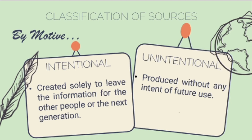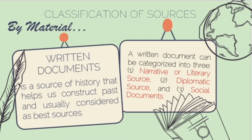Historians must consider the conditions under which a source was produced and the intentions that motivated its creation. Knowledge of the motivation behind the creation can be a good basis for objectivity. However, one of the great problems in historiography is that establishing objectivity in the creation of the source is good, but it does not guarantee the total reliability of the document's contents — you also have to check the reliability of the content itself.